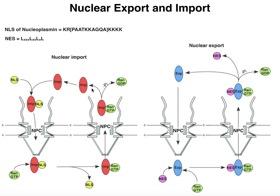This cycle of binding to the NLS of a protein, moving it into the nucleus, then displacing the NLS-bearing protein for RAN, movement back out into the cytosol with concomitant GTP hydrolysis — this is what allows continual protein import into the nucleus.